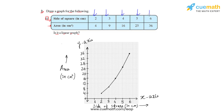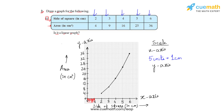Let us scale up the two axes. On the x-axis, we have taken five units to represent one centimeter. In the case of the y-axis, we have taken four units to represent four centimeters.